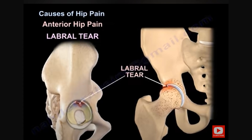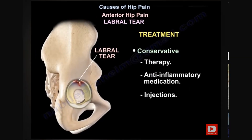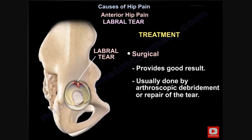Groin pain or anterior hip pain can also occur from a labral tear. The labral tear is usually diagnosed by clinical examination with a provocative test of flexion, abduction, and internal rotation. The diagnosis is confirmed by an MRI arthrogram. Treatment is usually conservative first — physiotherapy and anti-inflammatory medications and injections. Surgery provides good results and is usually done by arthroscopic debridement or repair of the tear.